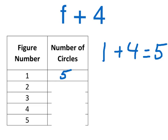So if we use our expression for figure number 2, we go 2 plus 4, and we know that that is equal to 6. For figure number 3, 3 plus 4 is 7. For figure 4, we have 4 plus 4, and that is equal to 8. And finally figure number 5, we have 9, because 5 plus 4 is equal to 9. So hopefully that makes a little bit more sense with this example.